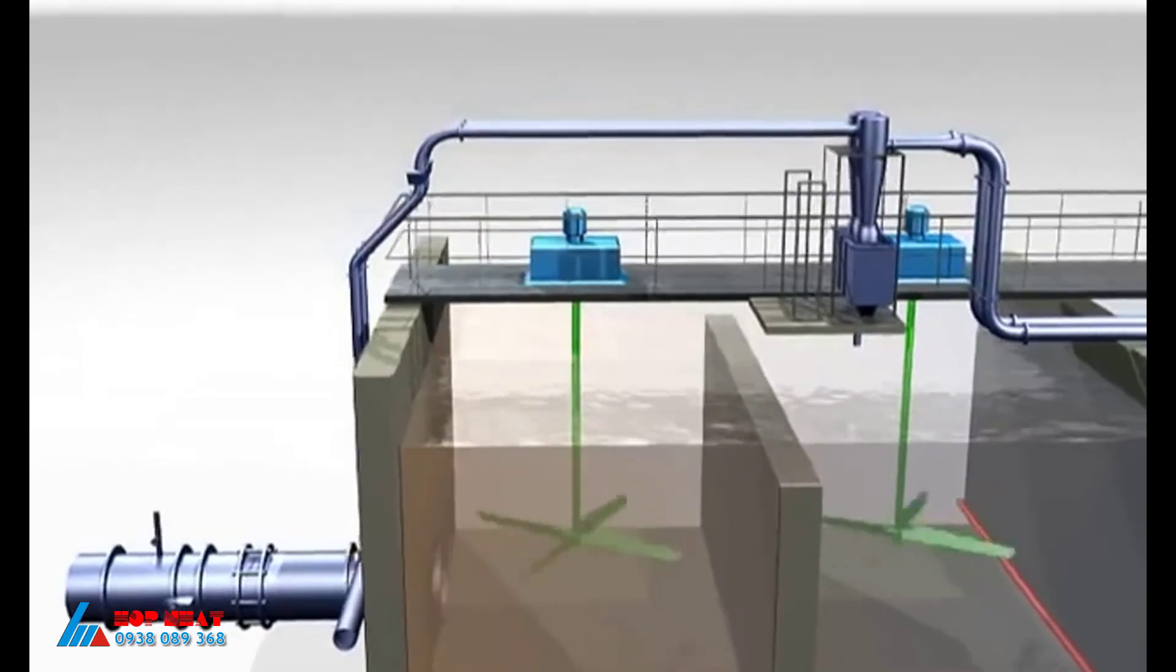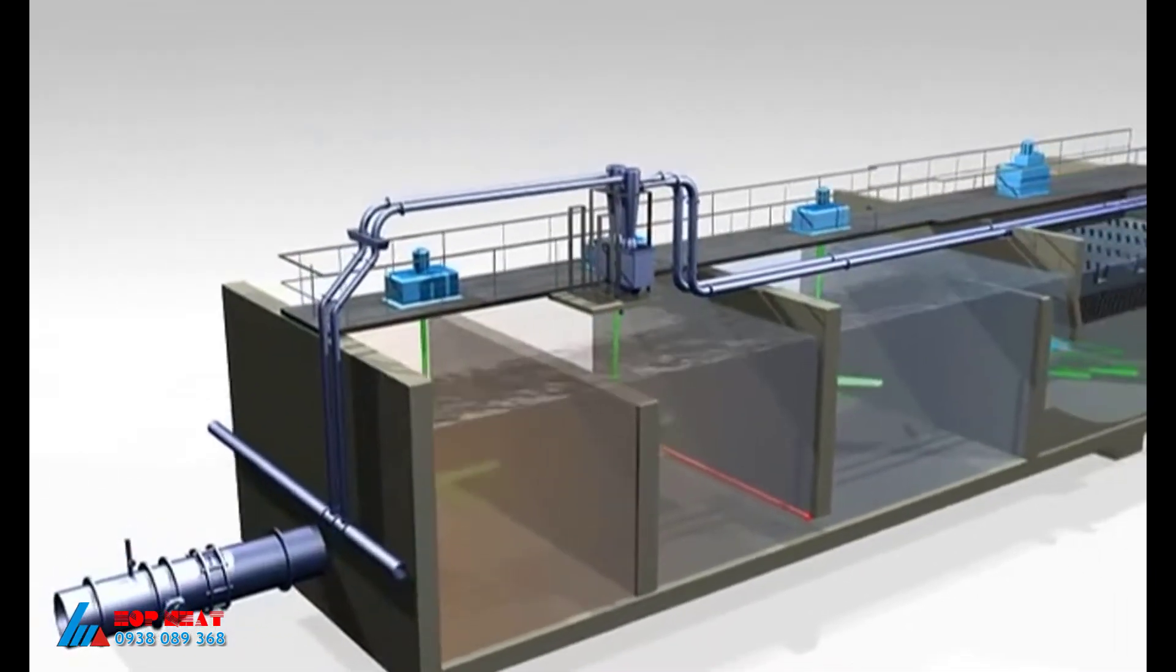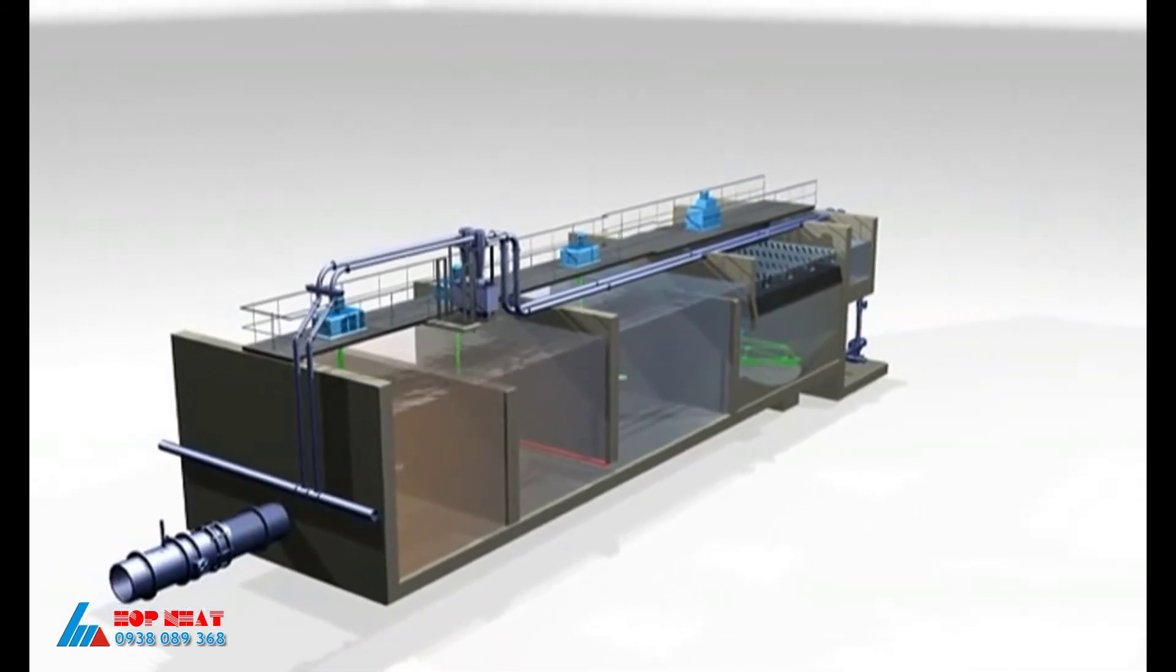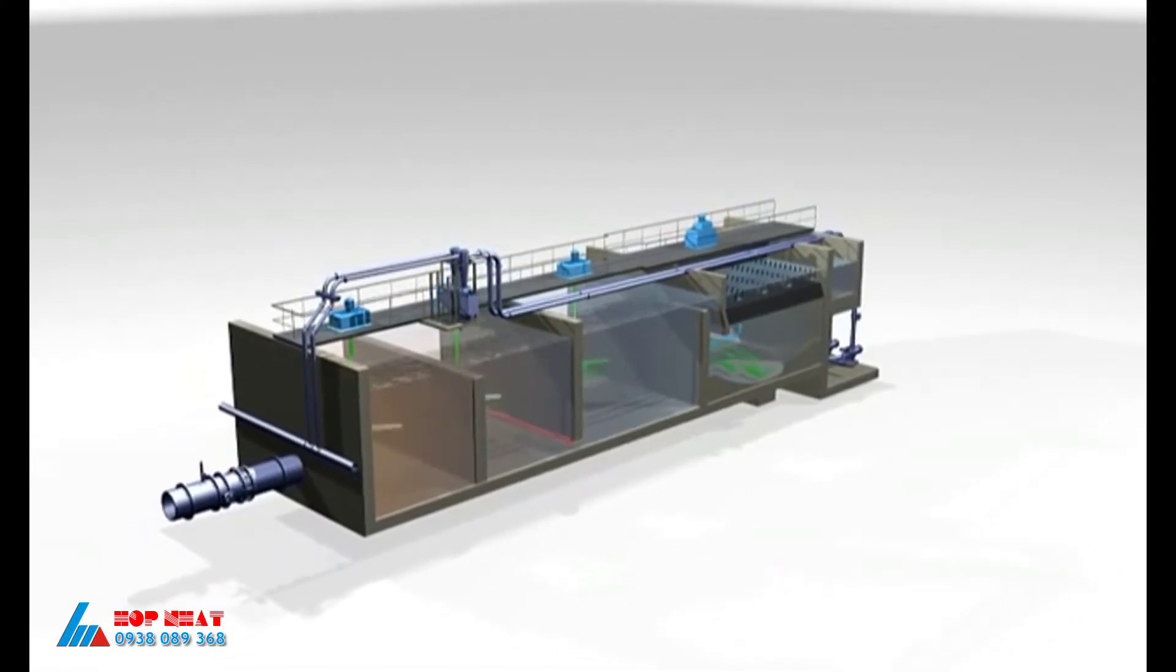In addition to ballasting the flocks, the micro sand dampens the effects of sudden variations in raw water quality and flow, making the process extremely stable. The short overall hydraulic retention time makes it easy for the process to adjust within minutes and for treatment to be quickly optimized.